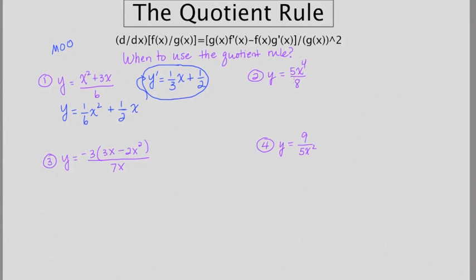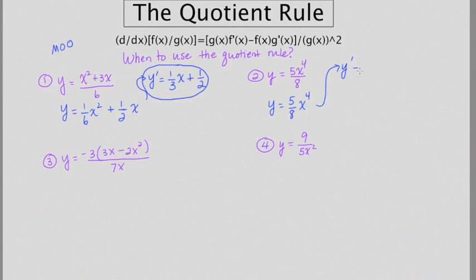A similar thing happens in example two. It looks like you've got a fraction and might need to use the quotient rule, but really this is going to be the same as five-eighths x to the fourth. The derivative of this becomes five-halves x cubed. Again, very easy, no quotient rule — you just have to consider rewriting it first.